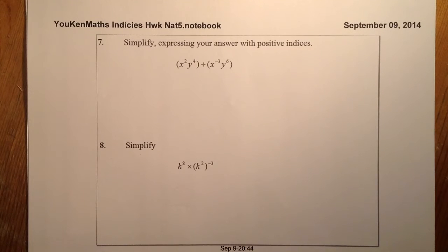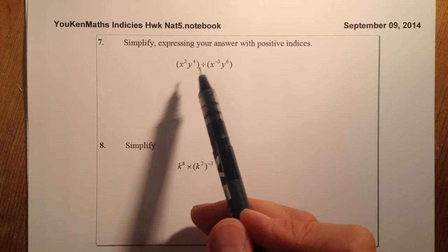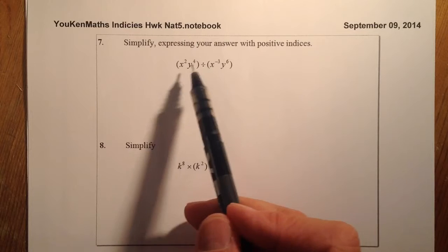This is National 5, indices homework using the Pegasus Resource Pack. I'm going to do questions 7 and 8. Question 7: simplify, expressing your answer with positive indices. This is what we've got here.